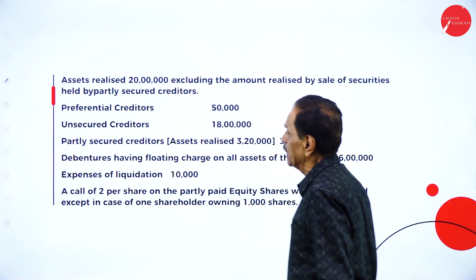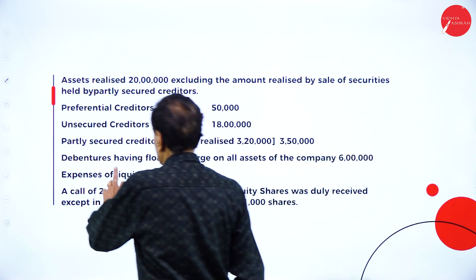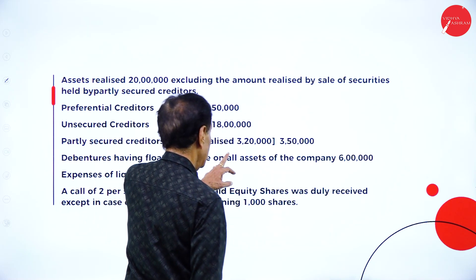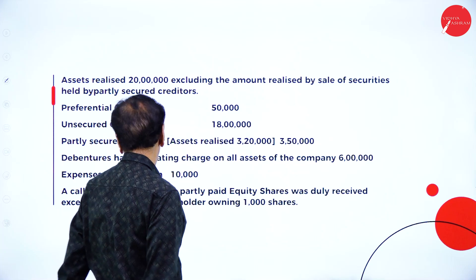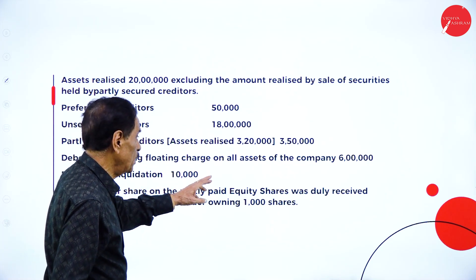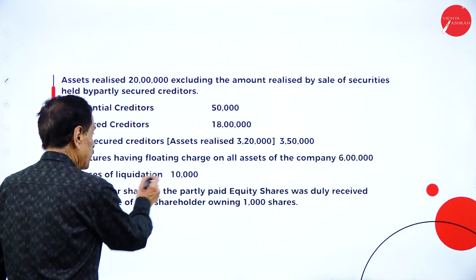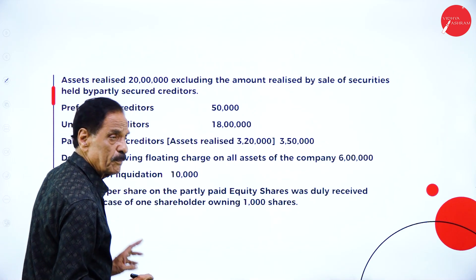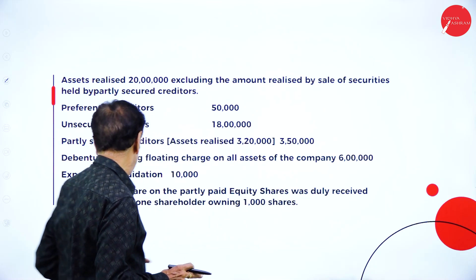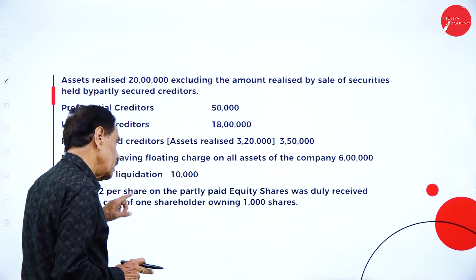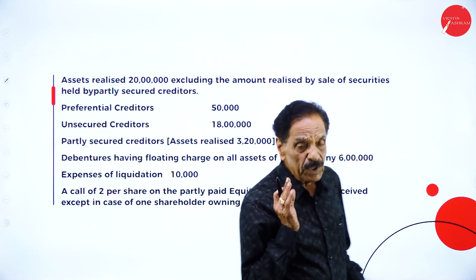Preferential creditors: Rs.50,000. Unsecured creditors: Rs.18 lakh. Partly secured creditor — asset realized: Rs.3,20,000; security given: Rs.3,50,000. Debentures having floating charges on all assets of the company: Rs.6 lakh. Expense of liquidation: Rs.10,000. A call of Rs.2 per share on partly paid equity shares was duly received except in the case of one shareholder owning 1,000 shares.